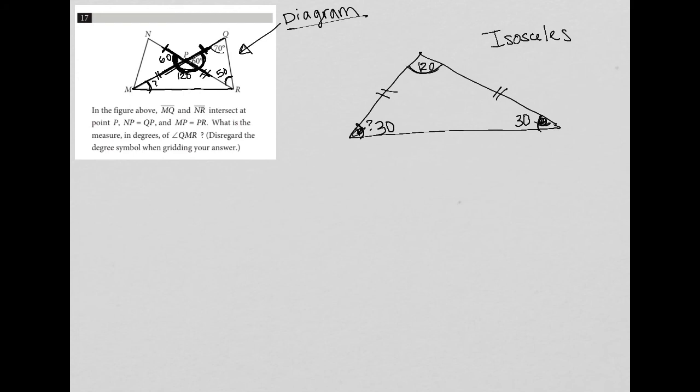We know that's 120, and all added up that's 180. So the angle we were looking for is this angle here. Our answer would be 30 degrees. And of course, we don't have to worry about the degree symbol when filling that in.